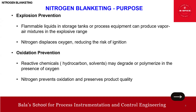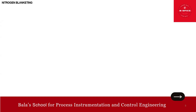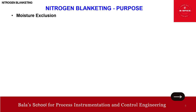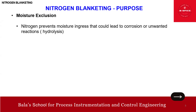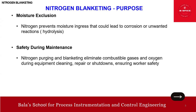The third purpose is moisture exclusion — nitrogen prevents moisture ingress that could lead to corrosion or unwanted reactions such as hydrolysis. The fourth purpose is safety during maintenance: nitrogen purging and blanketing eliminate combustible gases and oxygen during equipment cleaning, repair, or shutdowns, ensuring worker safety.